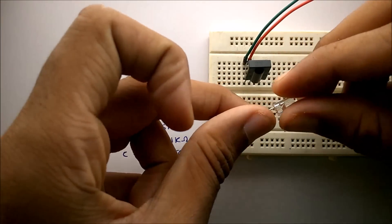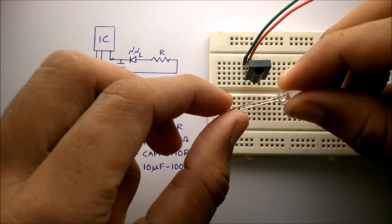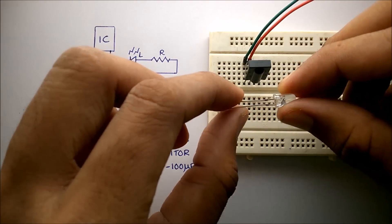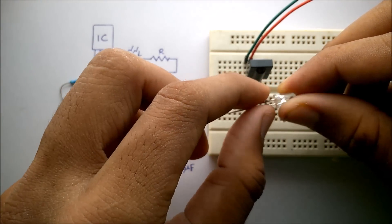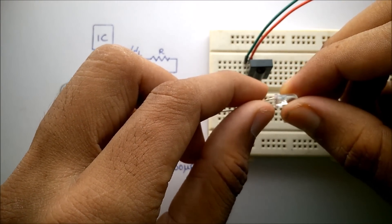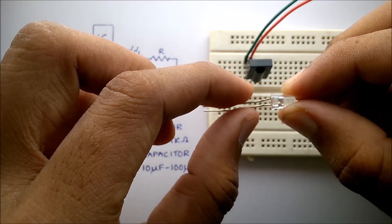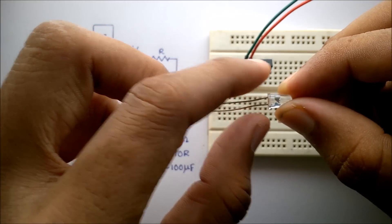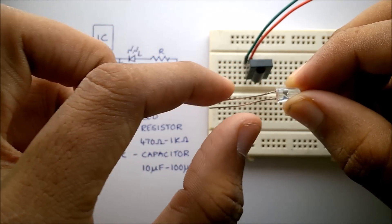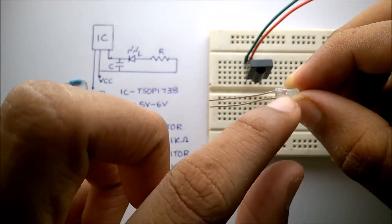Now in order to find the negative terminal of the LED, you should find the flat surface. For this LED, the flat surface is on this side. So this is the negative terminal of the LED and this is the positive.